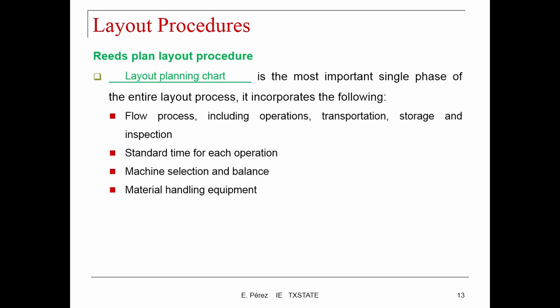A layout planning chart is the most important single phase of the entire layout process. It incorporates the following: the flow process including operations, transportation, storage, and inspection; standard time for each operation; machine selection and balance; and the material handling equipment.